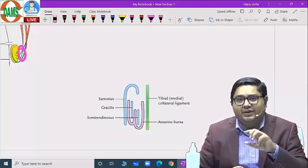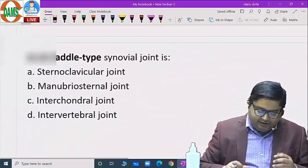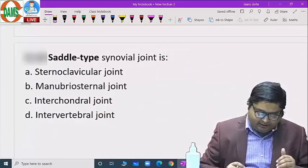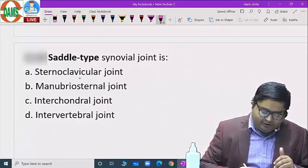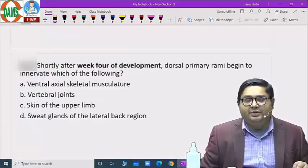Next question: saddle type synovial joint, sternoclavicular joint is the answer here. Shortly after week 4 of development, dorsal primary rami begin to innervate which of the following?